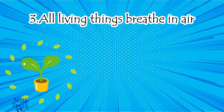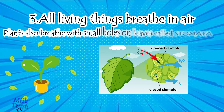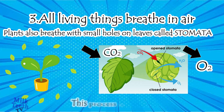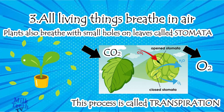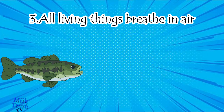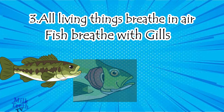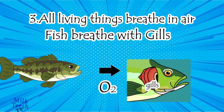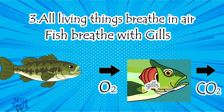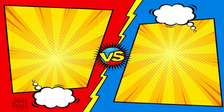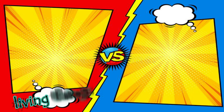All trees and plants breathe through small holes on their leaves called stomata. They breathe in carbon dioxide and breathe out oxygen — this process is known as transpiration. Living organisms in water, like fish, breathe with the help of gills, taking in oxygen and breathing out carbon dioxide.